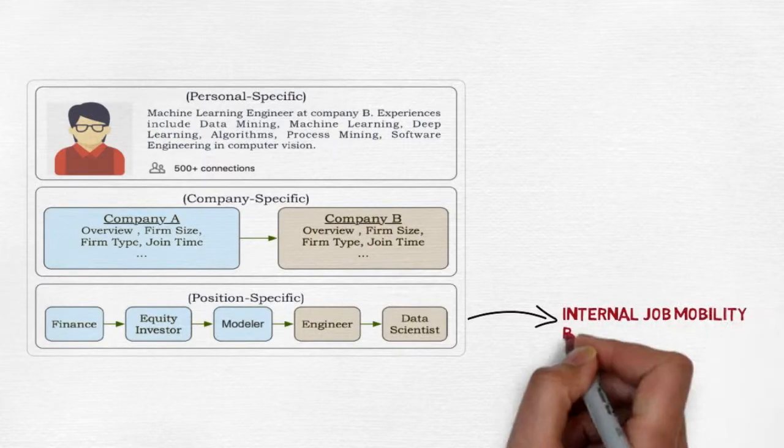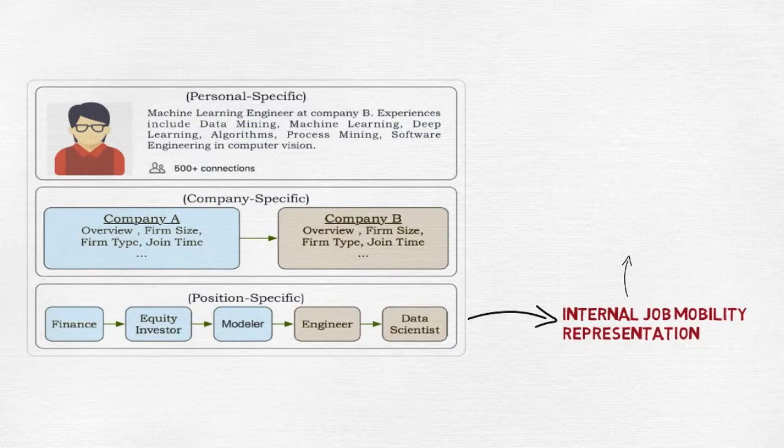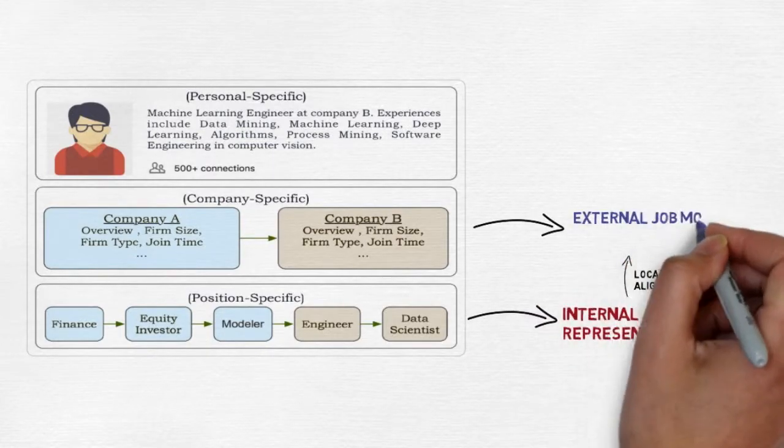In our model, we apply long short-term memory and rotation mechanisms for obtaining the internal job mobility representation, external job mobility representation, and static personal representation hierarchically, which has the ability to learn the influence of internal and external job mobility under next job positions.